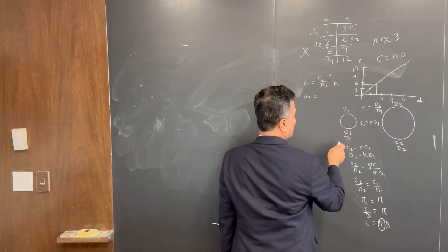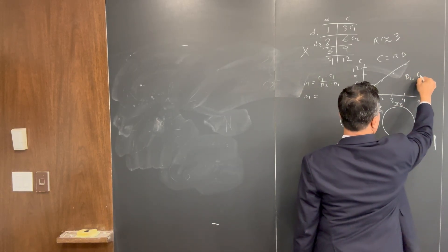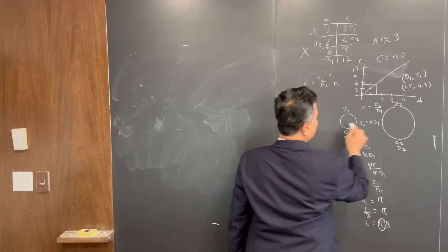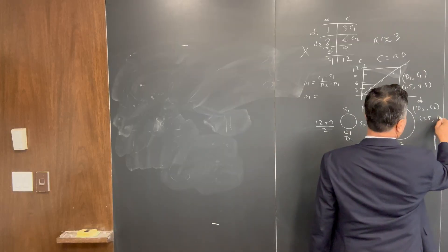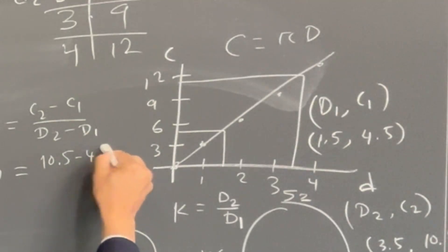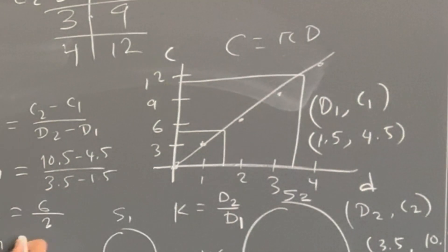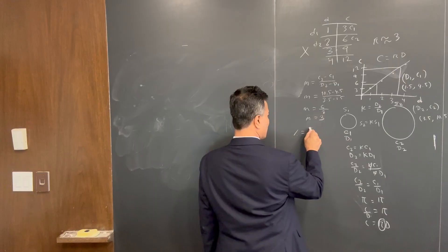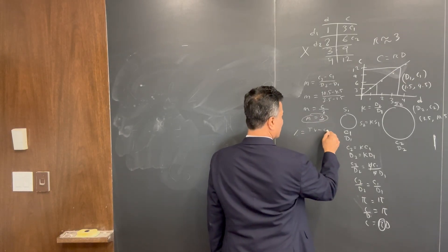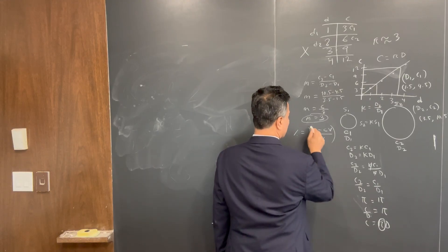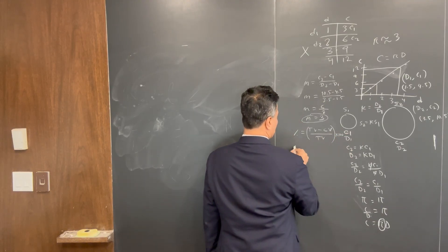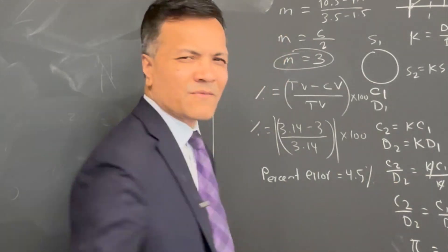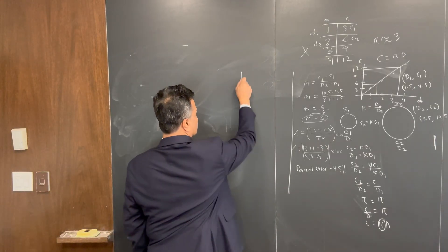I'm going to use two points from the best-fit line: d1 comma c1 is 1.5, 4.5 and the second point is 3.5, so the slope is (5.5 − 4.5) over (3.5 − 1.5). Now I'm going to find the percent error: percent error equals (true value minus calculated value) divided by true value times 100. True value is 3.14; (3.14 − 3) divided by 3.14 is less than 5%, so that's fine.